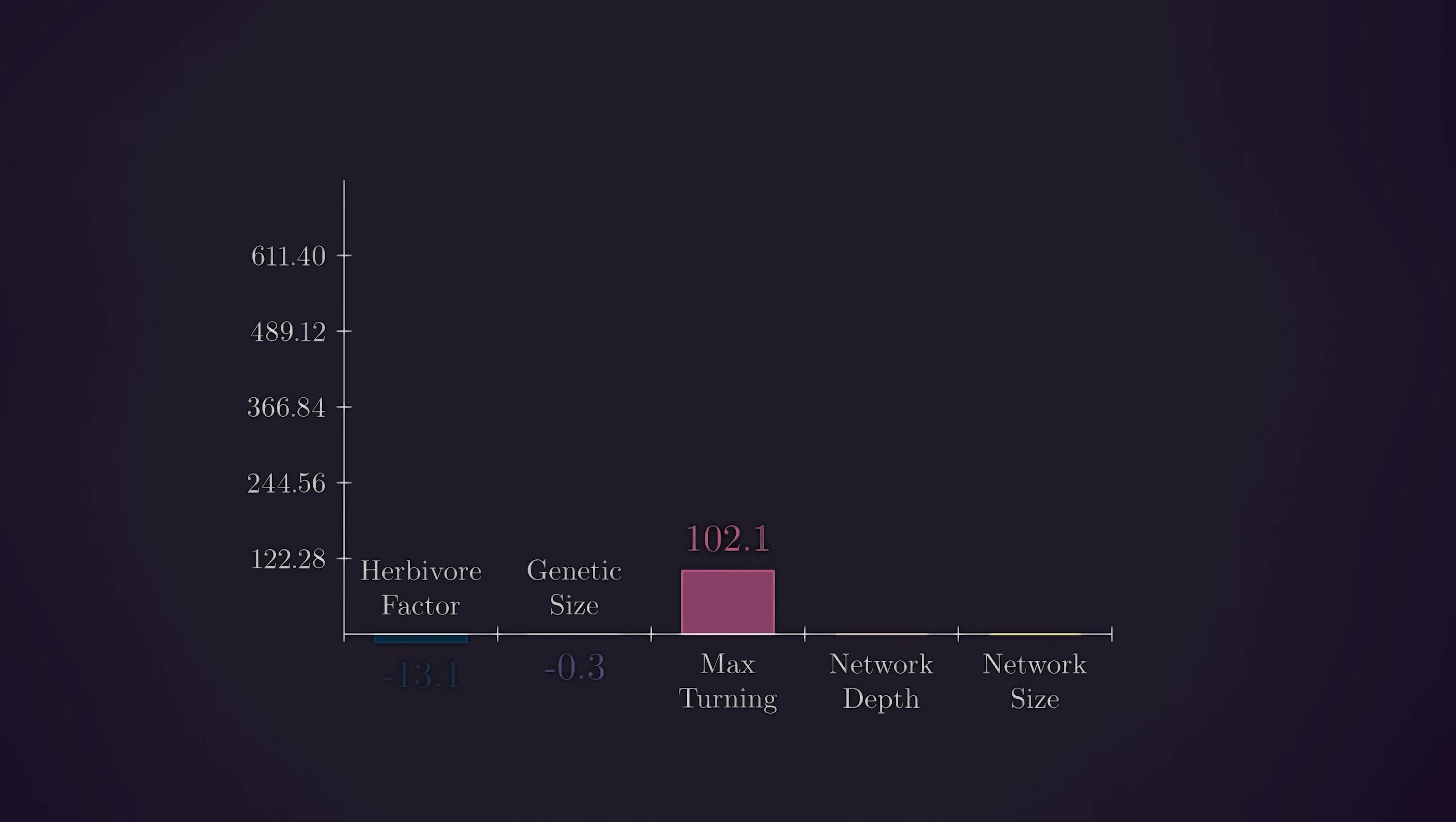Next is max turning. This is the first trait of this sample that had clear evolutionary change. Max turning controls how swiftly a protozoa can turn its body to move or see in a new direction. We see that it clearly gradually increases over time.